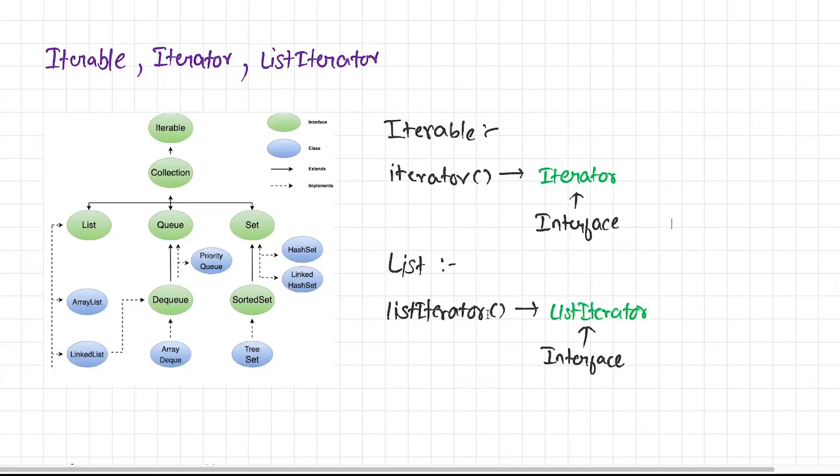Before I talk anything about iterable, iterator, and list iterator, first we have to understand the collection hierarchy. If you look at this hierarchy, there are two interfaces that play a crucial role in order to understand iterable, iterator, and list iterator.